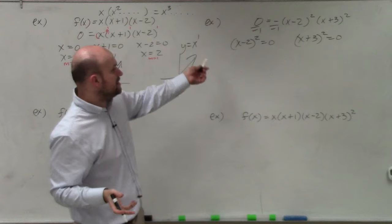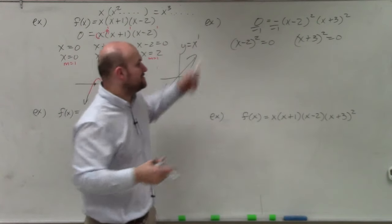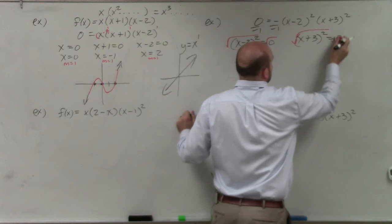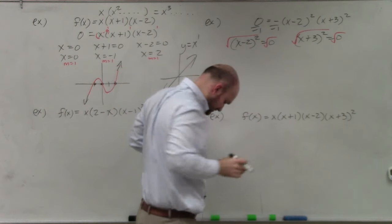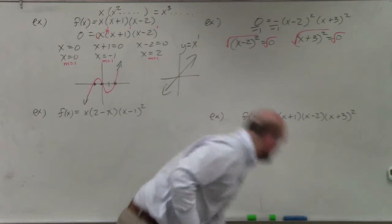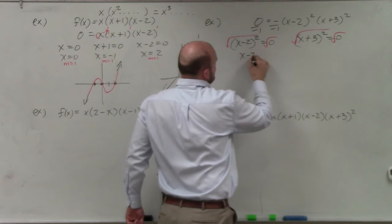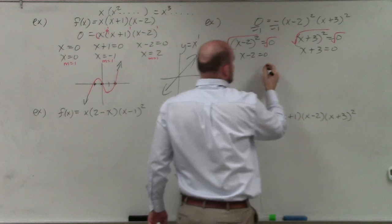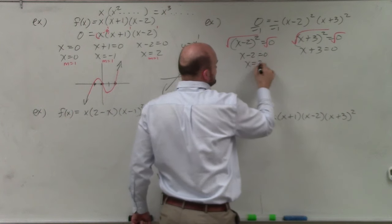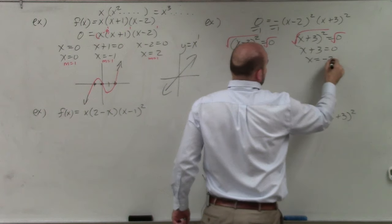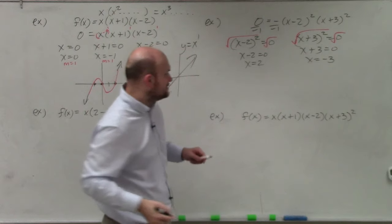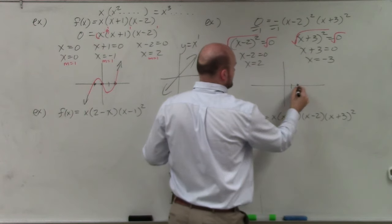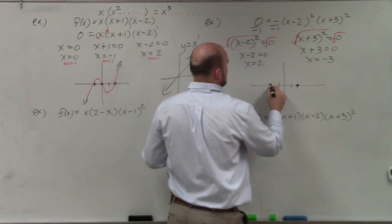To solve, you can't just add 2 — you have to undo the squaring by taking the square root on both sides. That gives x minus 2 equals 0 and x plus 3 equals 0. So my zeros are x equals 2 and x equals negative 3. I'll plot those at (2, 0) and (−3, 0).